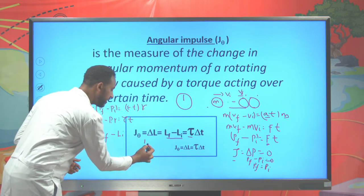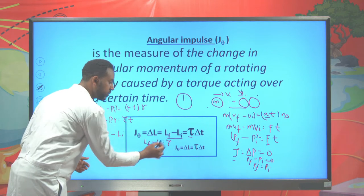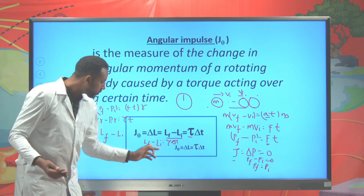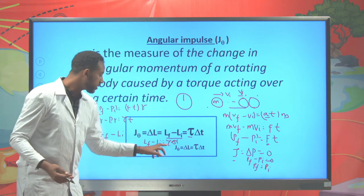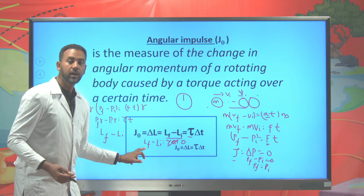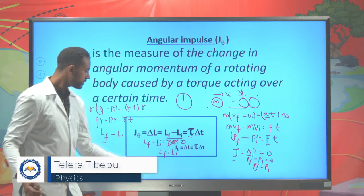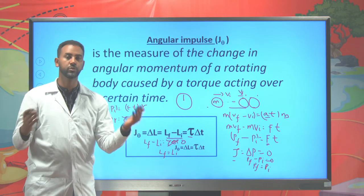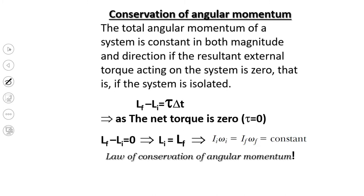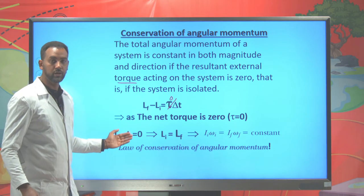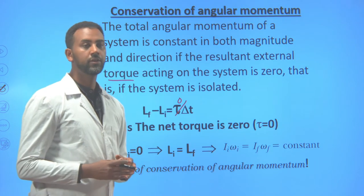Keeping that in mind, the final angular momentum minus the initial angular momentum equals net torque times t. The final and initial angular momentum remain constant if and only if the net torque is zero. If the net torque is zero, the final angular momentum equals the initial angular momentum. This is the law of conservation of angular momentum.